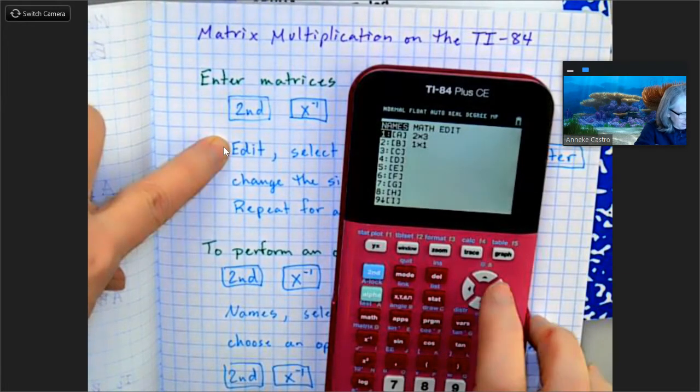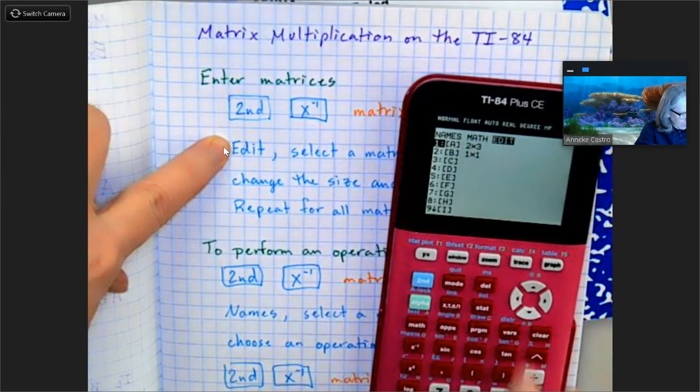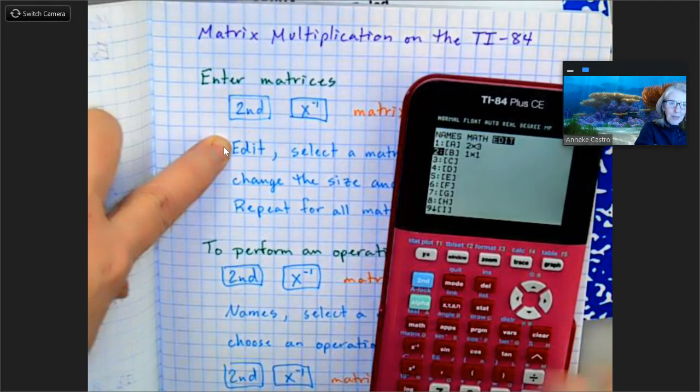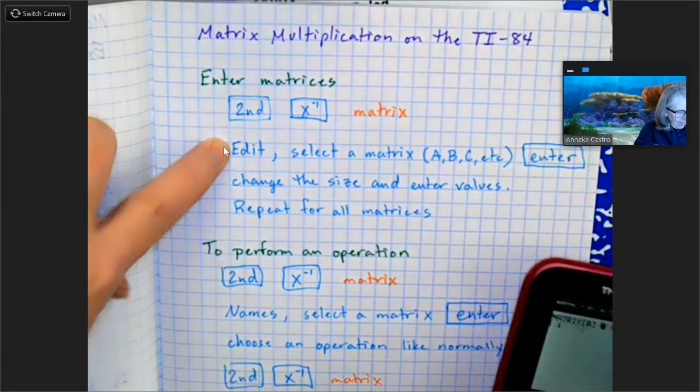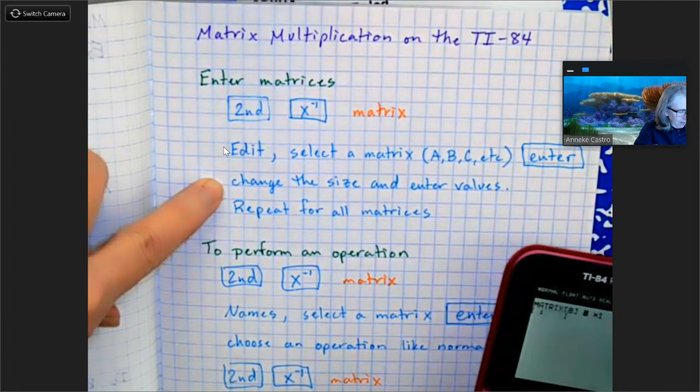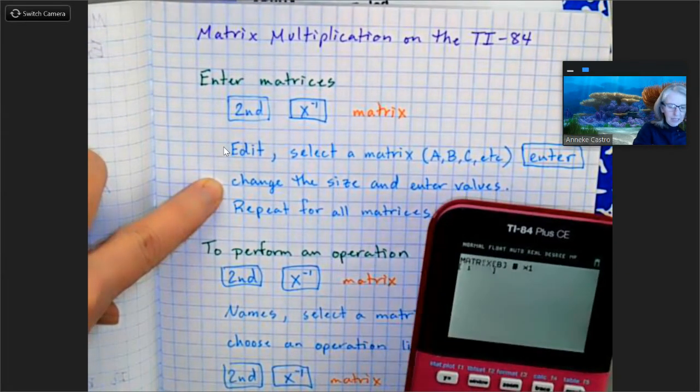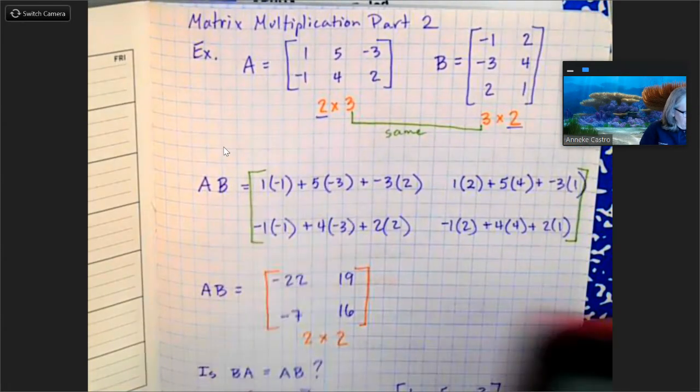I'm going to do this again. I'm going to do second matrix and I'm going to go over to edit, and I'm going to select this time I'm going to select matrix B. And I'm going to enter in my size and my values.